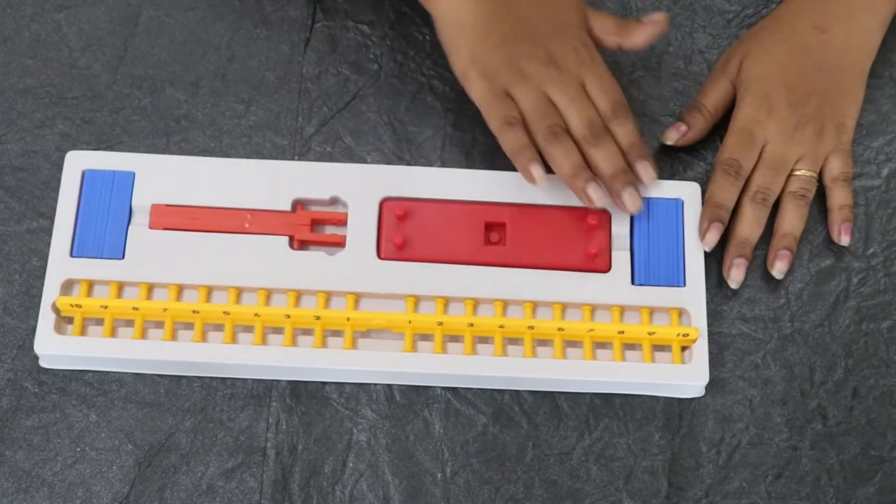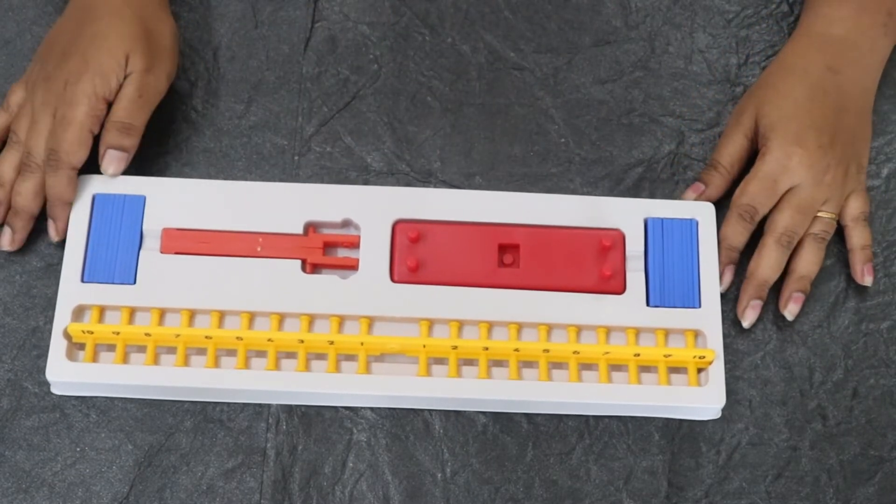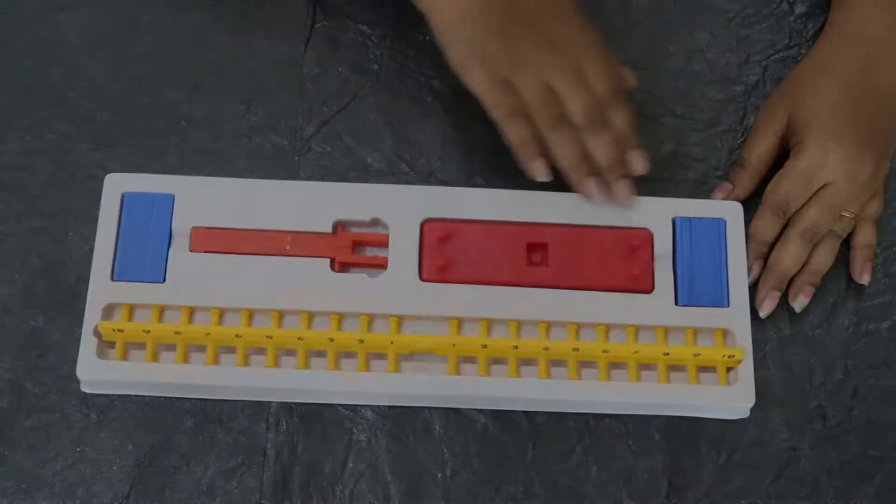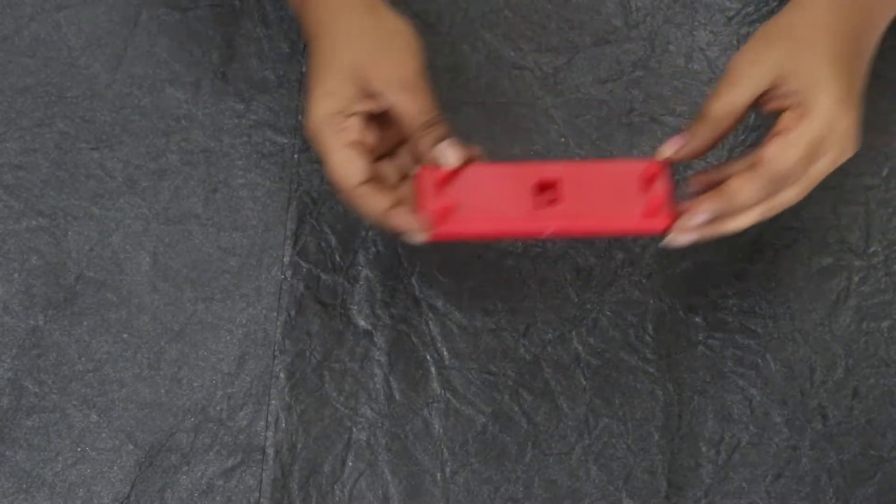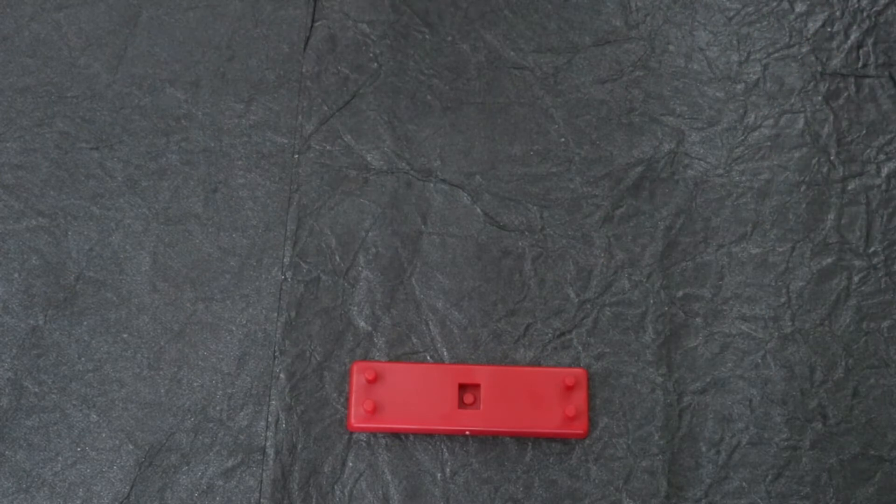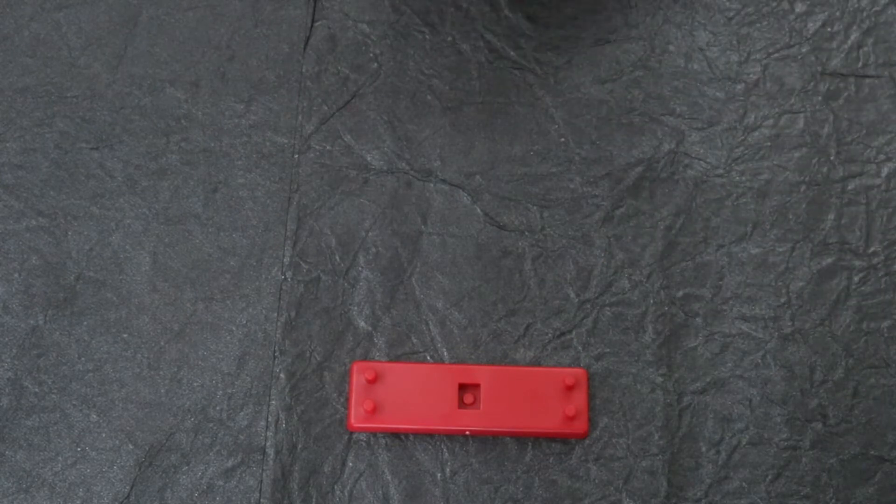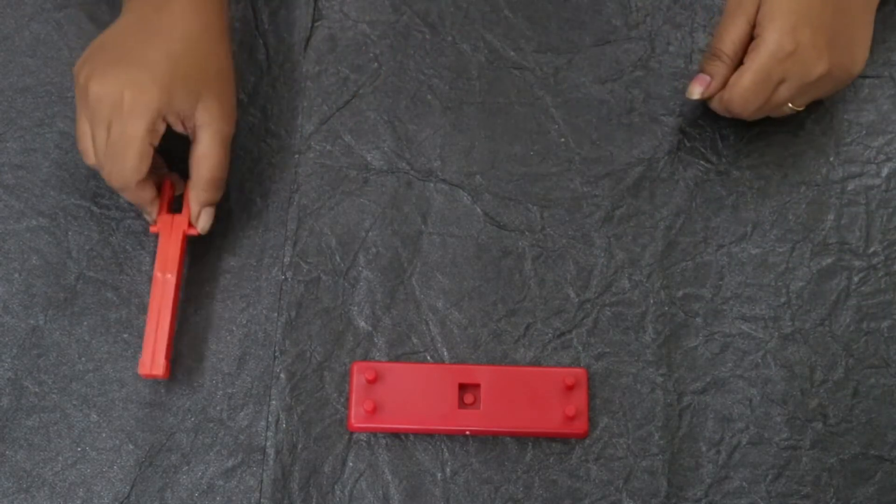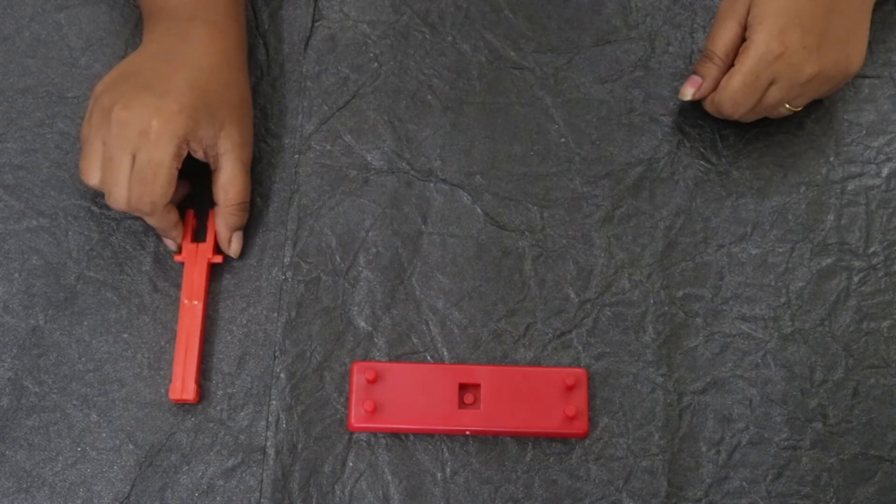These are the components in the number balance kit. Let us take a look at them one by one. This is the base of the number balance. We have a vertical rod. These two components will help to keep the number bar balanced in a horizontal manner.